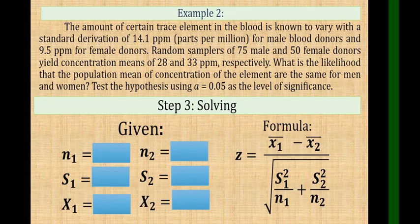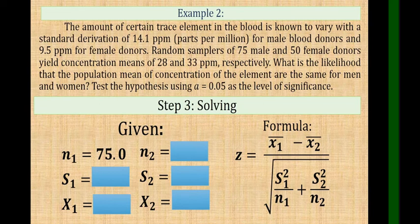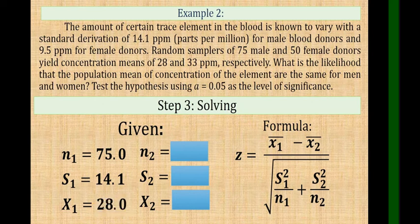First determine n1. The n1 is 75 from the 75 male. There is a standard deviation of 14.1, and the mean concentration is 28.